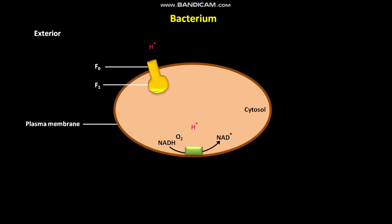the O2 reacts with other reactants to produce H2O. The movement of electrons through plasma membrane carriers is coupled to the pumping of H+ ions, or protons, from the cytosol to the exterior of the bacterial cell. As a result, the H+ ion concentration increases in the exterior of the bacterium, whereas the H+ ion concentration decreases in the bacterial cytosol.